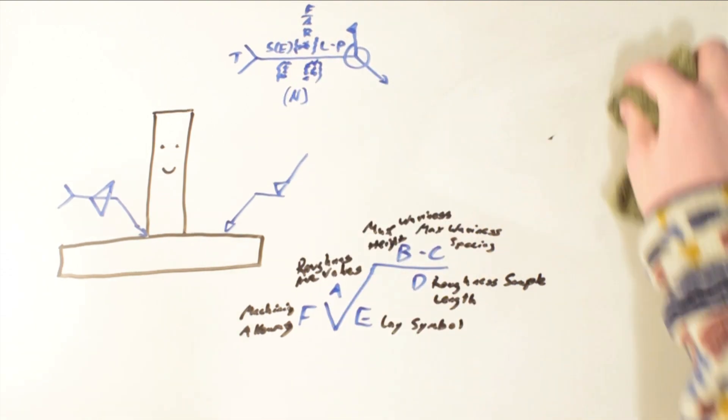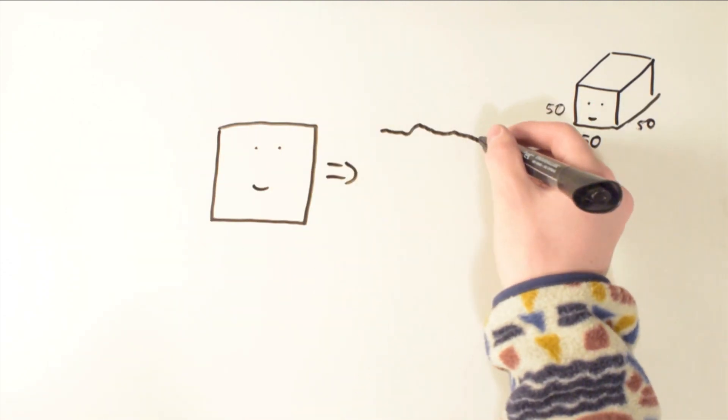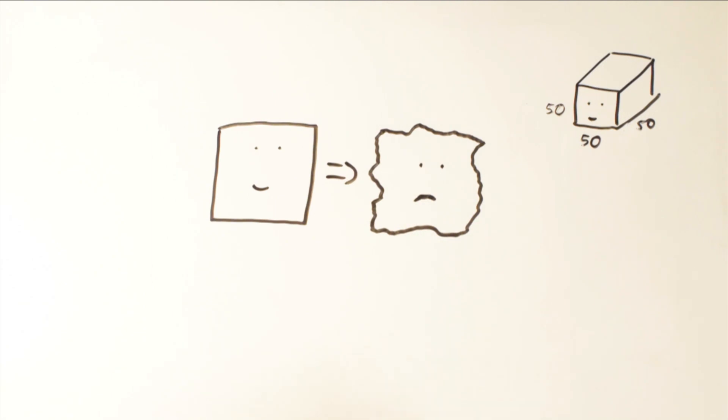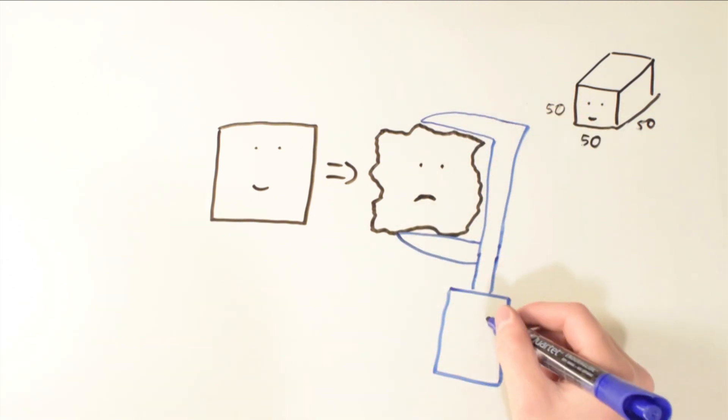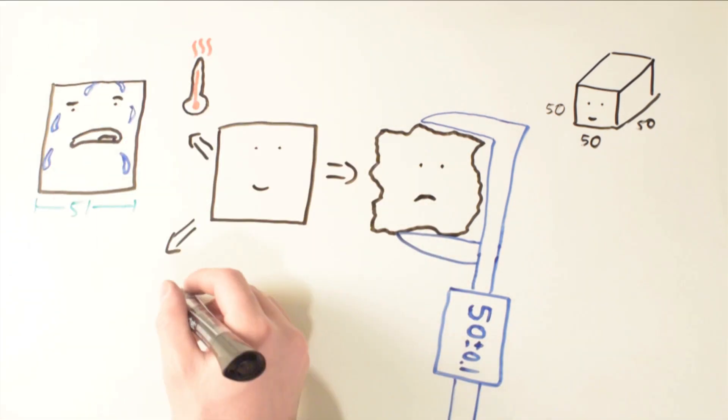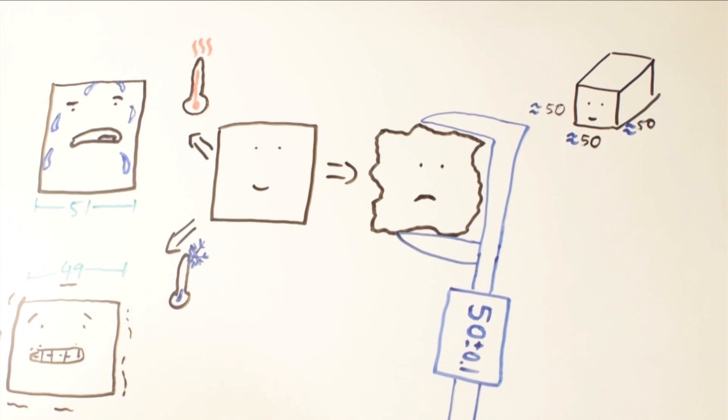So with the traditional dimensioning out of the way, we can now talk about tolerancing. Because we live in an imperfect world, asking someone to machine a perfect 50x50x50mm cube would be absolutely impossible. There's error in the machining, there's error in the measuring, and on top of that, materials grow and shrink depending on the temperature. For this reason, you need to give a range for the dimensions to fall within.